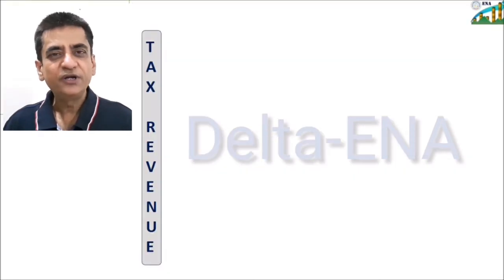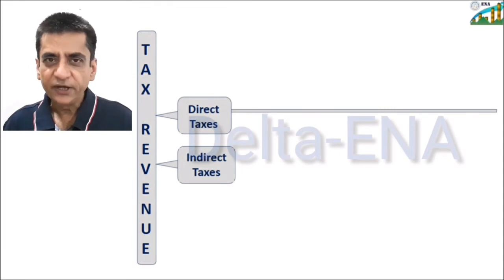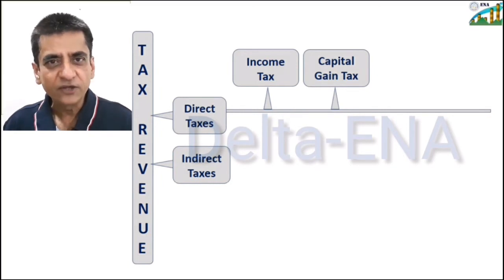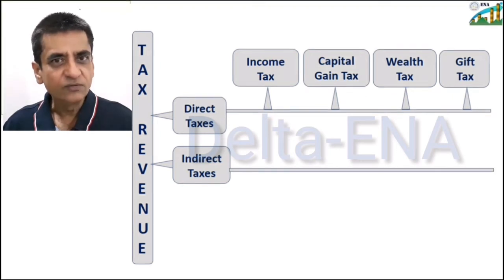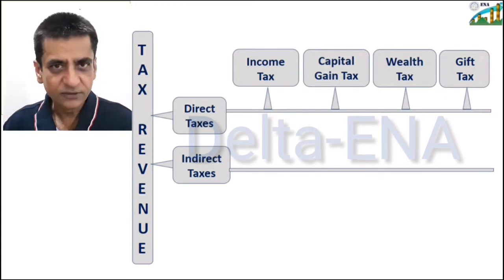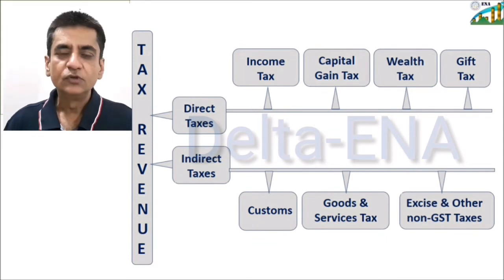Let us now understand tax revenue in detail. Tax revenue is divided into direct taxes and indirect taxes. Direct taxes are the taxes which are paid directly to the government, like income tax, capital gains tax, corporate tax, wealth tax, and gift tax. Indirect taxes are those which we pay while buying goods and services — these are indirectly paid — such as customs duties, excise duty, and GST.